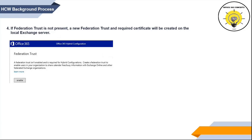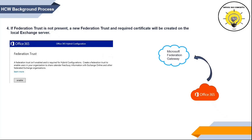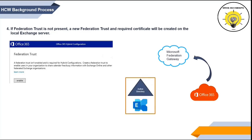If a federation trust between the on-premise Exchange organization and Microsoft Federation Gateway is not already created, HCW will give you a prompt and ask you to enable federation trust. A federation trust creates a trust relationship between two different organizations. When you sign up for an Office 365 tenant, a federation trust is automatically created with Microsoft Federation Gateway. But for the on-premise Exchange organization, either you can create this trust manually or HCW will create the federation trust automatically. When this federation trust is created, a self-signed certificate is stored on the on-premise Exchange server, which can be verified by running Get-ExchangeCertificate | FL.